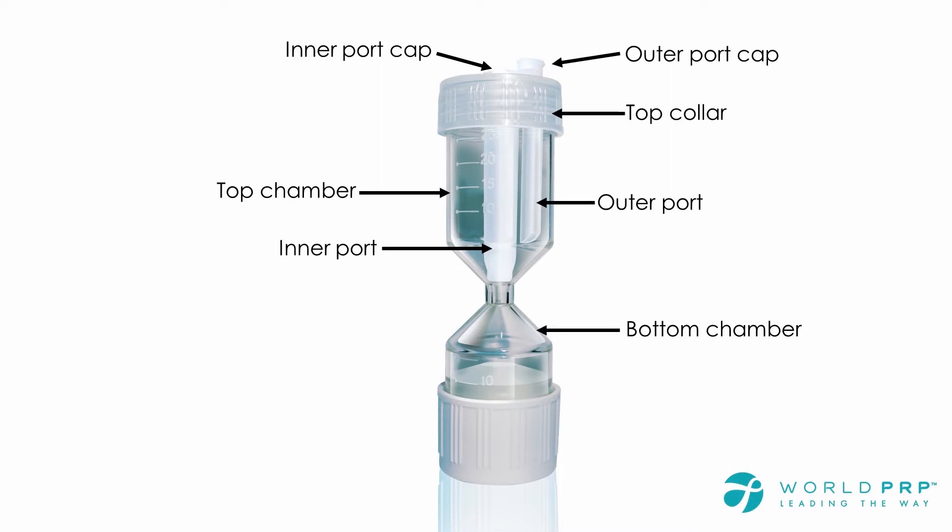The top collar is used for turning either counterclockwise or clockwise to open or seal the connection between the top chamber and the bottom chamber. After centrifugation the red blood cells are separated into the bottom chamber with the buffy coat on the surface. The bottom collar is used for gently turning counterclockwise moving the inner piston up, pushing the buffy coat into the neck of the device and then into the top chamber.